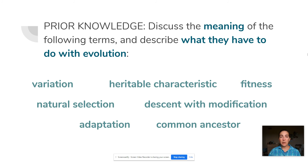Hopefully by now you've already taken a look at the prior knowledge document, especially the parts that relate to evolution. We're going to take a couple minutes today and just review these vocab words. If there are any words you see on the screen right now that you don't remember, you may want to look them up quickly, because we're going to be reviewing the basics of how natural selection works and leads to the evolution of traits or adaptations that help an organism to be more fit in its environment.